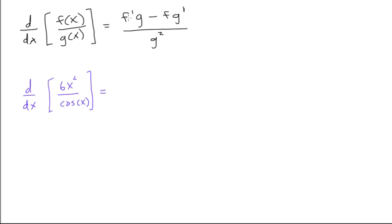So we'll follow this method and we'll get the answer. So first of all, you want f prime, which is going to be 12x, 12x times cos of x, cos of x, minus,